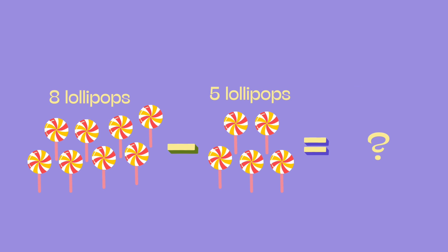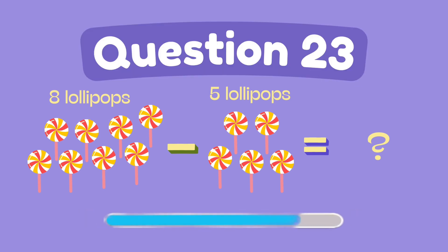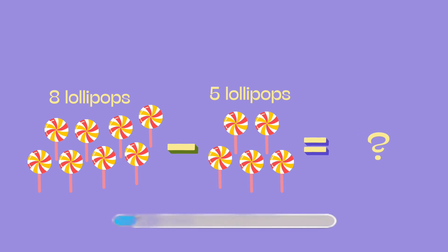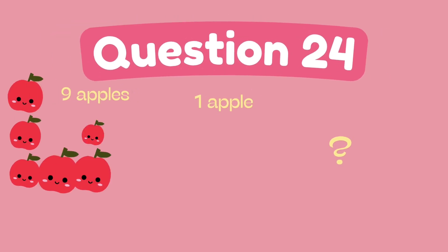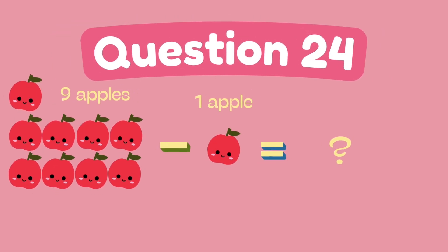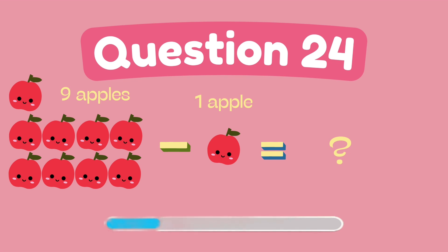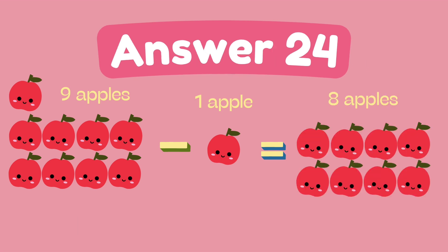What is eight minus five? The answer is three. What is nine minus one? The answer is eight.